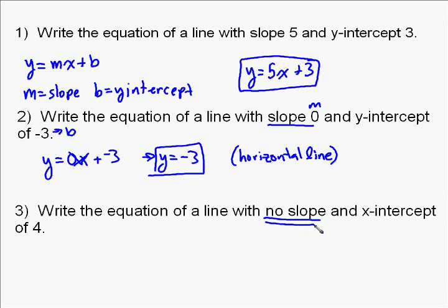The third example deals with when we have no slope. And if you remember, no slope always has to do with a vertical line. And when you talk no slope, it doesn't really fit in to our y equals mx plus b.